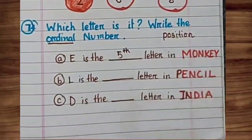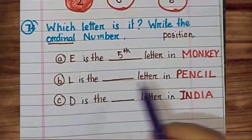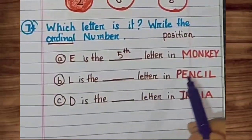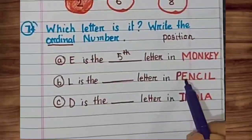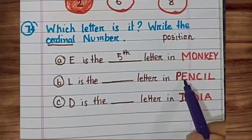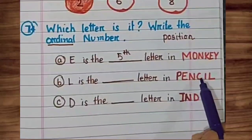Next, L. L ka position kya hai? Pencil mein. P is the first position. E is the second. N third. C is fourth. I is fifth. And L is sixth position.